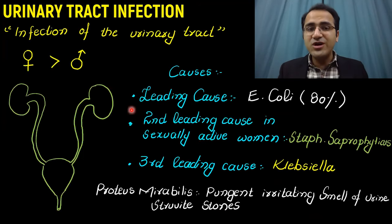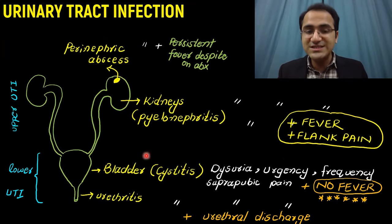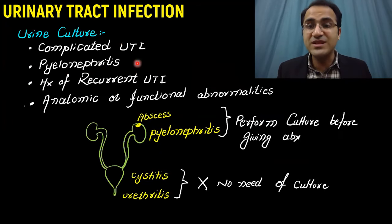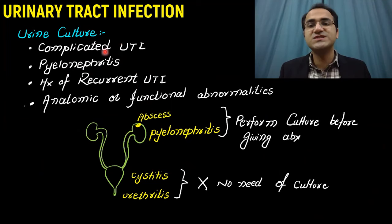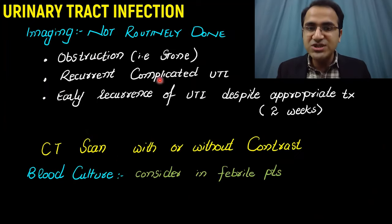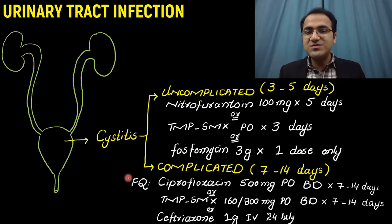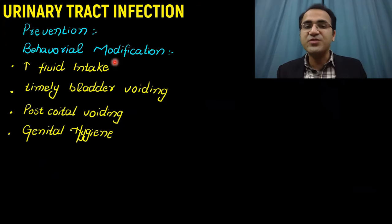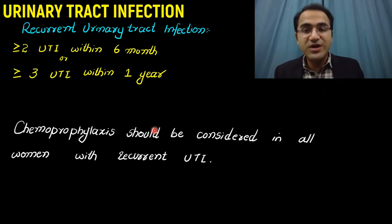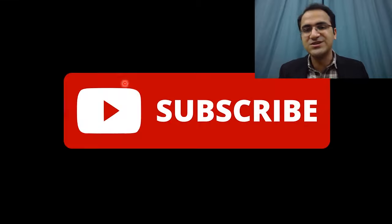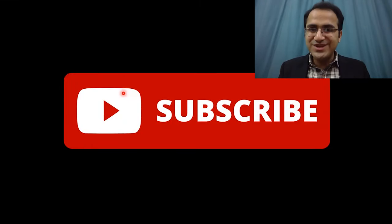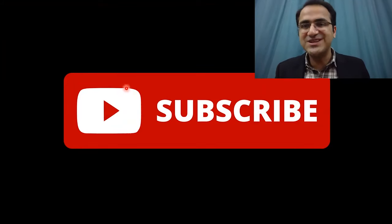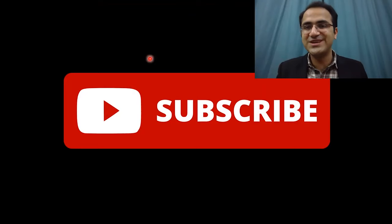In summary, we covered what is UTI and all the causes, the classification including urethritis and their symptoms, urinalysis findings, when to perform culture and when not to, imaging indications, treatment of urethritis, cystitis based on complicated versus uncomplicated, pyelonephritis and abscess treatment, behavioral modifications, and recurrent UTI prophylaxis. If you liked this video, please subscribe and check out the other videos in the infectious medicine playlist.